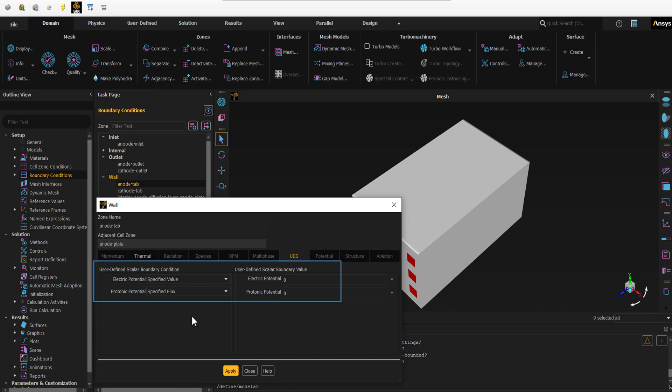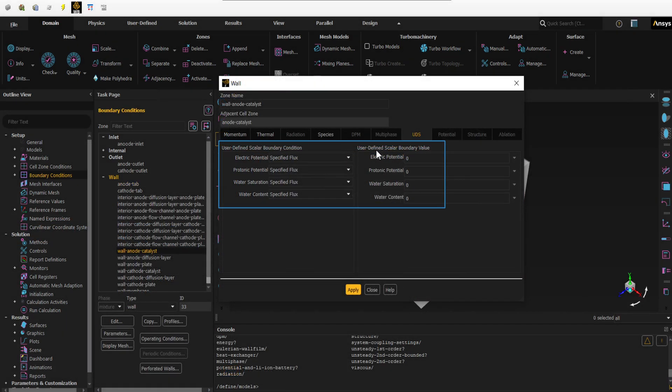So we can use the specified value mode to define the specified voltage, or we can use the specified flux mode to define the specified current density. We assume that the voltage or electric potential is zero on the anode terminal. We consider all scalars including electric potential and protonic potential equal to zero.